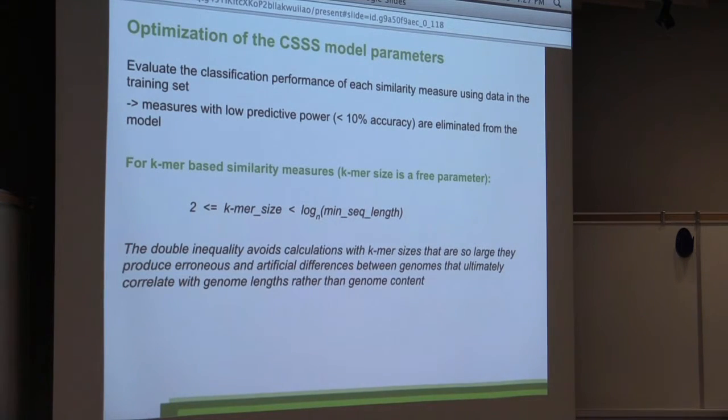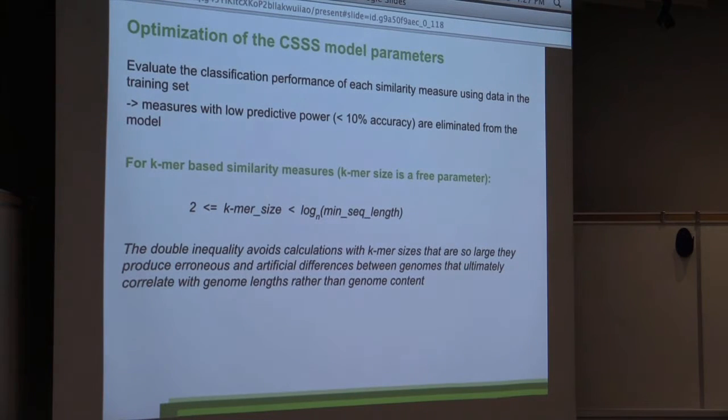So we have three parameters in the model, very few. There is the k-mer size which varies between two and an upper threshold which is indicated by log n. This is basically to avoid classifying sequences based on their length instead of based on their content.